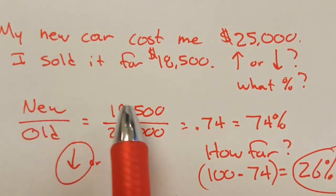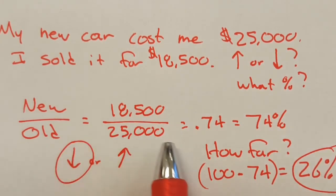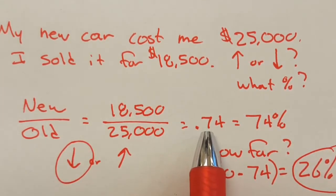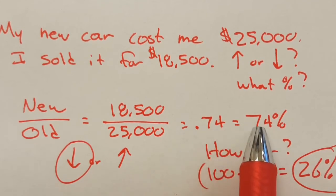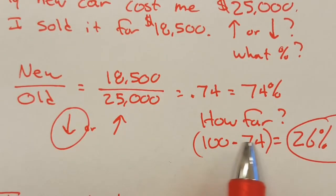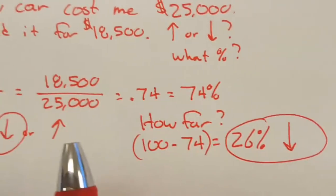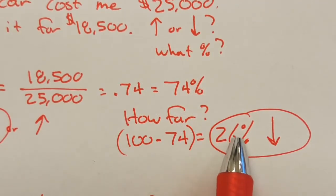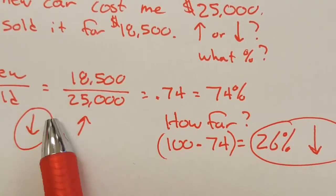Then if you take the new number, $18,500, divided by the old number, $25,000, I get .74. Again, two decimal slides, that's 74%. That is not your answer. Your answer is how far from 100 are you? Well, if you quickly take 100 minus 74, you're off by 26%, so that's a 26% decrease.